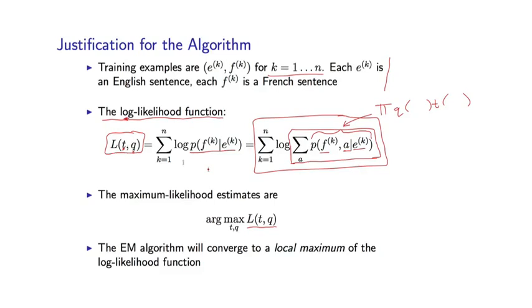Now as it happens, this likelihood function is quite nasty. It's quite difficult to optimize.